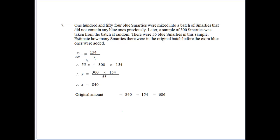Well, we multiply 300 by 154, then divide by 55. And we get X being equal to 840. So if we take our 154 blue Smarties that were included in the 840, then we should have had about 686 in the original amount.